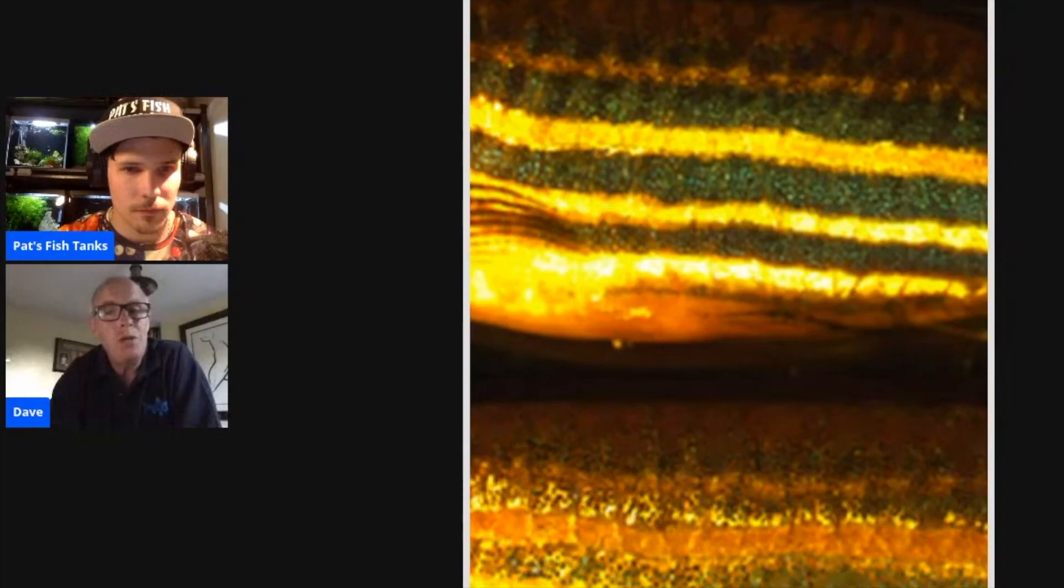If you go to a guppy show, the guppies are always shown in tanks with a black background and a black base. If you show them against a pale background or no background and just bright lights, then they don't show their true color.